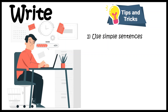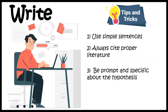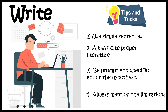In your SOP, use simple sentences — don't use complicated phrases or fancy language. It has to be very clear, short, and easy to understand. Always cite the proper literature for any claim you make. Be specific about your hypothesis and don't beat around the bush — just state it clearly with a proper background. Always mention the limitations of your experiments, because no experiment is perfect. Suggest backup plans — this actually makes your SOP more enriched, not weaker.